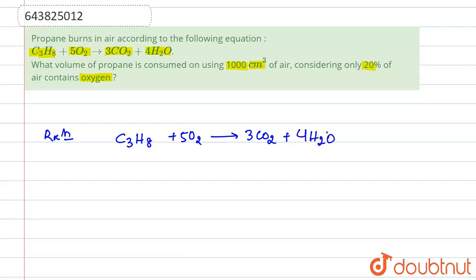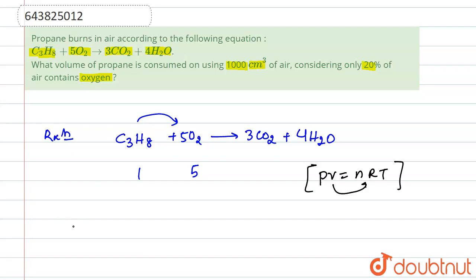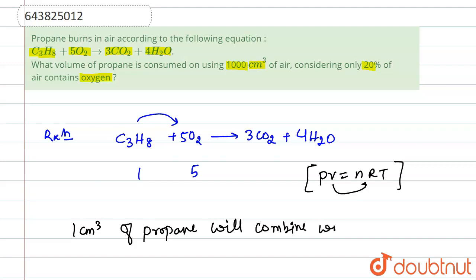From this reaction, we observe that one mole of propane combines with five moles of oxygen. We also know that volume is directly proportional to number of moles, from PV = nRT. So one centimeter cube of propane will combine with five centimeter cube of oxygen.